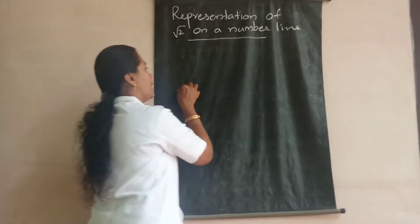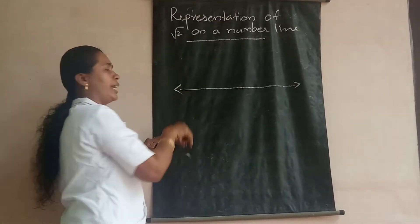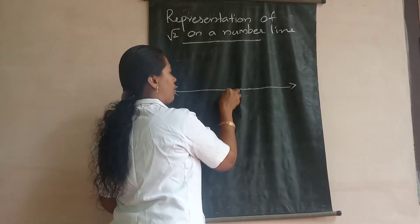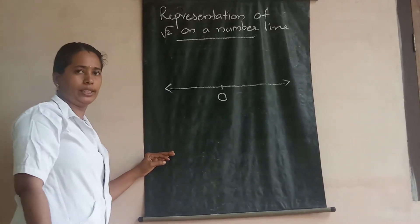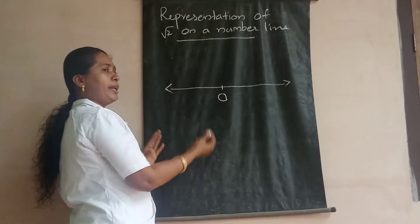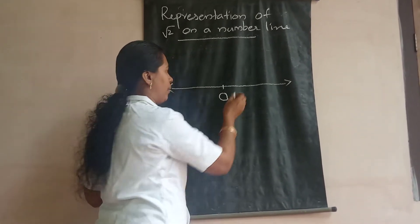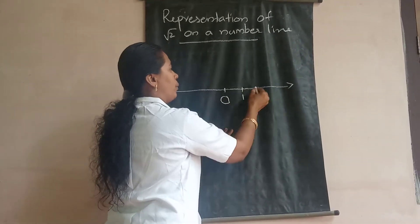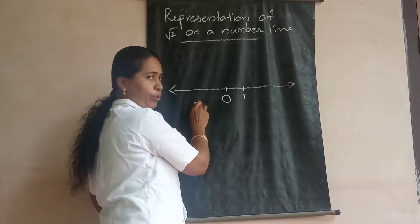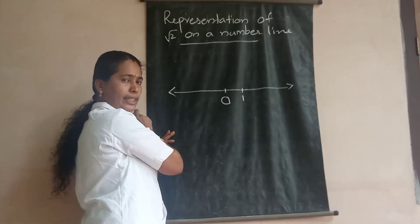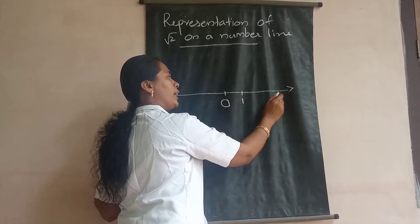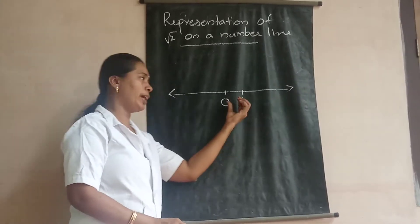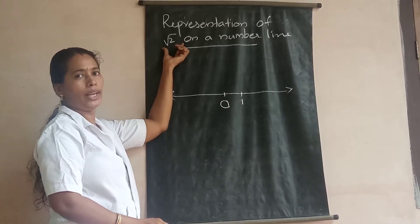A number line is very clear to us — we already studied it in case of integers as well as rational numbers. It's a line full of numbers. Let us start with 0 somewhat in the middle. On both sides, taking 1 centimeter on our scale as 1 unit. On the left: negative 1, negative 2, negative 3, etc. On the right: 1, 2, 3, 4, 5, 6, etc. I am considering this because I need to represent root 2 on the number line.